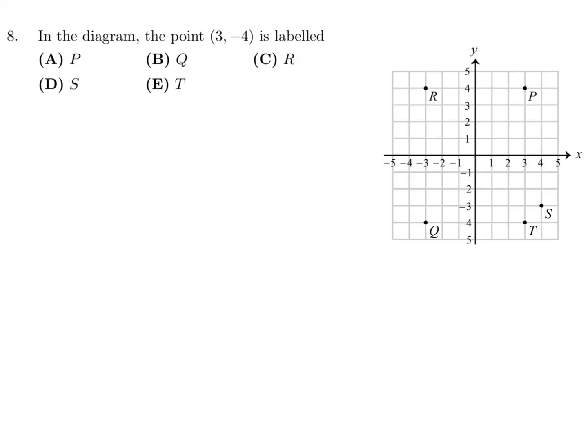Question 8: In the diagram, the point (3, −4) is labeled. The 3 represents the X coordinate, so this is 3. The −4 represents Y, so that means it's down here. Matching them up: 3 going down to negative 4, and that is point T. That would be choice E.